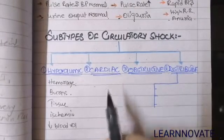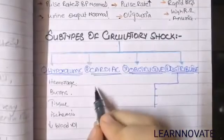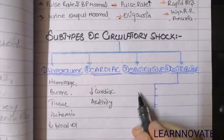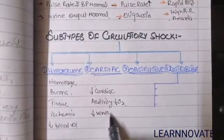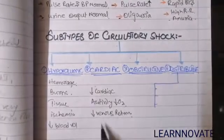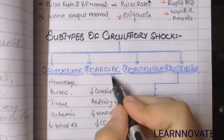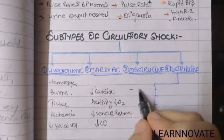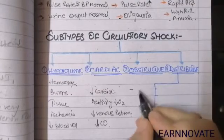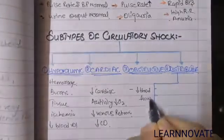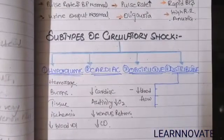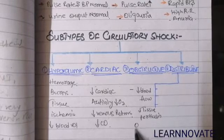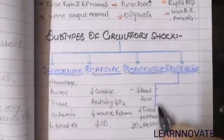The second type is cardiogenic shock, related to cardiac activity. When there is decreased cardiac activity, the heart cannot pump enough blood to the body. There is a decrease in oxygen, decrease in venous return to the heart, and decrease in tissue perfusion ratio, causing decreased cardiac output and cardiogenic shock. The third type is obstructive shock, which occurs when there is any obstruction in the pathway of blood flow from the heart to the body or back. This causes decreased tissue perfusion ratio and decreased oxygen delivery to tissues while oxygen demand increases.